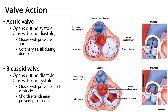There is also an aortic valve that is adjacent to that, and during systole the aortic valve is wide open and the bicuspid valve is shut. During diastole the aortic valve is closed and the bicuspid valve is wide open.